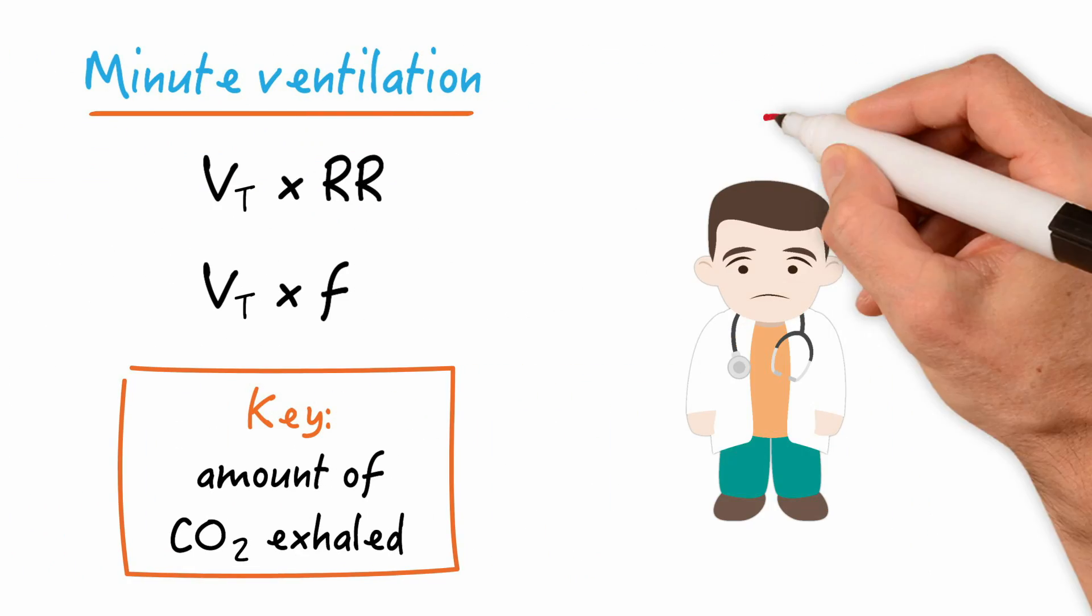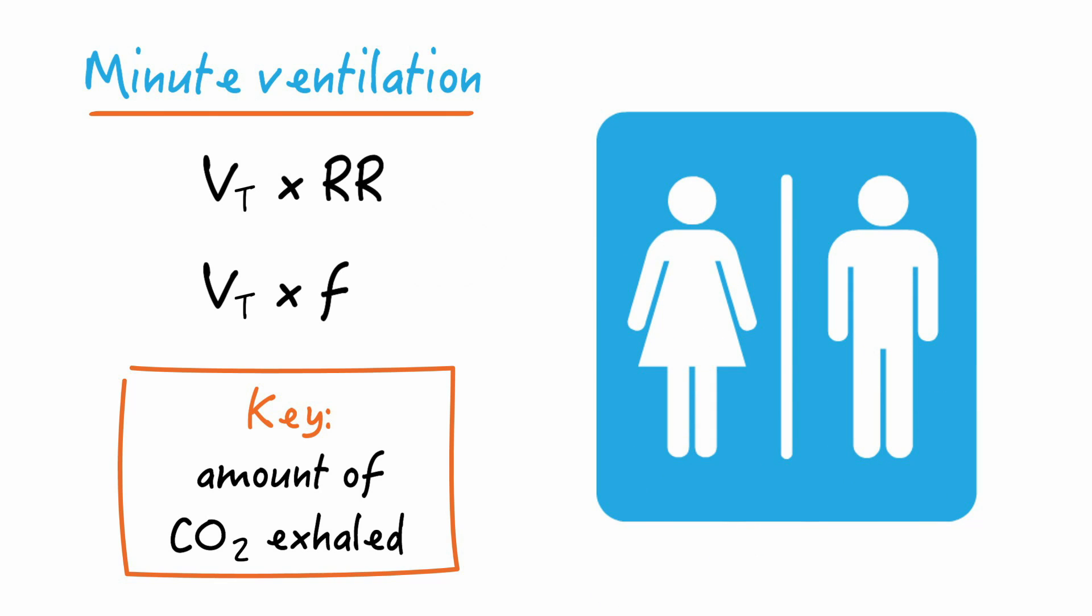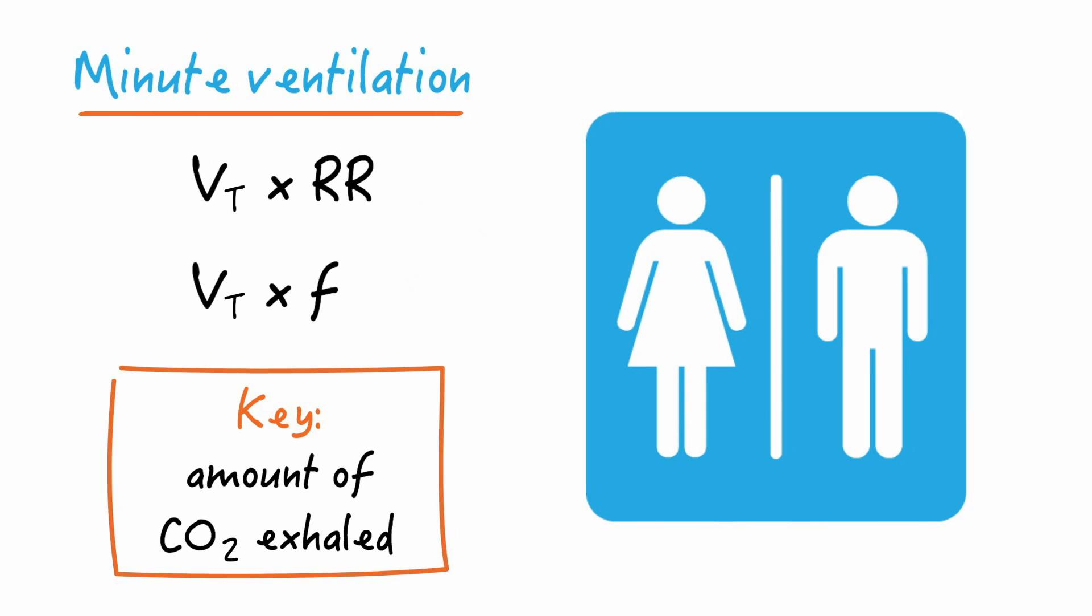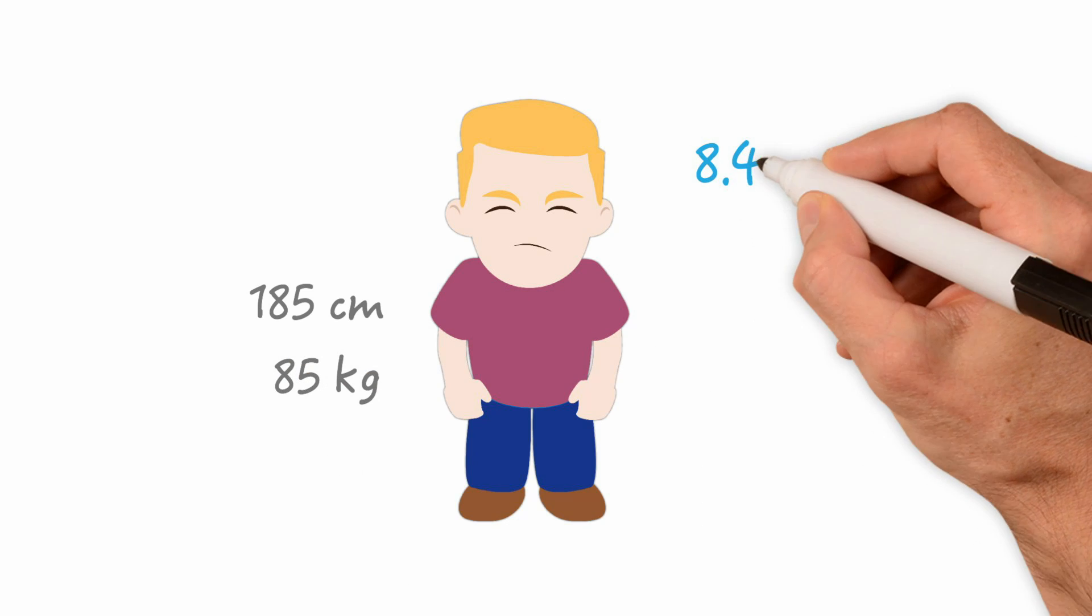So how do we know how much minute ventilation a patient needs? We can calculate the amount of minute ventilation required for a patient based on several factors, such as an individual's gender and body surface area. For example, we can estimate that the minute ventilation requirement for an adult male who is 6 feet tall and weighs 85 kg would be about 8.4 liters per minute.